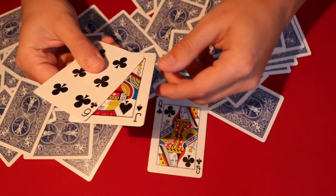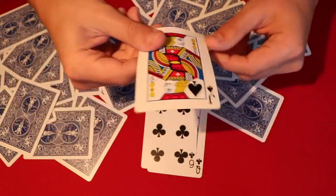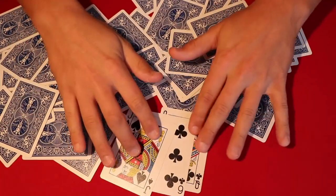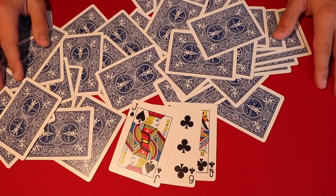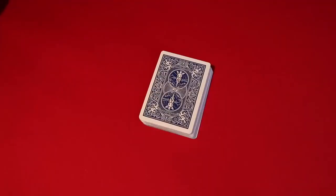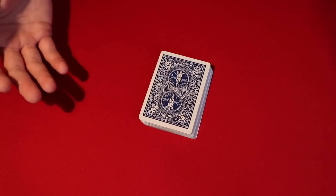You flip the cards over - you have the Queen of Clubs, you have the Six of Clubs, and the Jack of Spades. So this is the trick, and if you guys want to learn how to do it, do not forget to stick around for the tutorial.